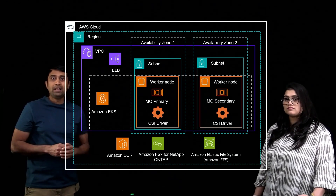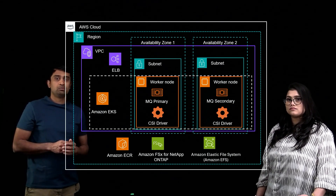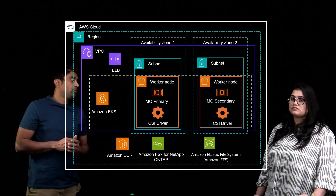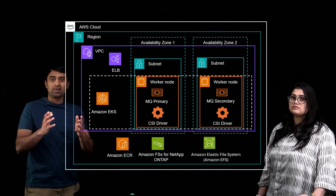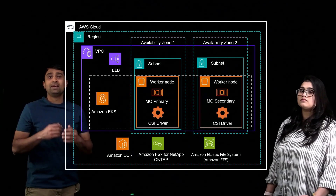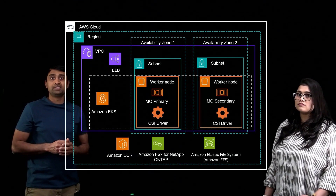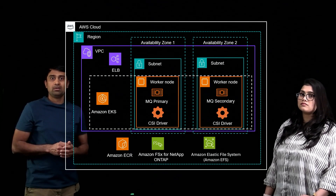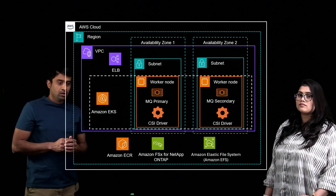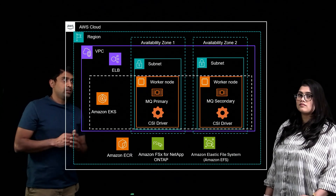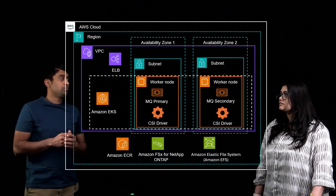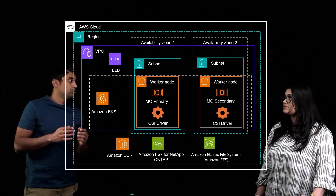With a multi-instance deployment, customers get to use two availability zones for high availability, with a primary instance of IBM MQ running in one availability zone and a standby or secondary instance of MQ running in another availability zone. Now, let's say you have a primary and a secondary and a failover happens — your secondary becomes the primary. What happened to the queue data?